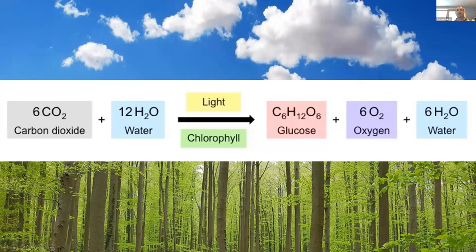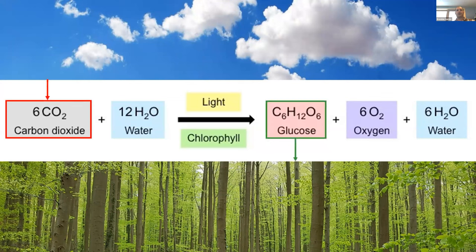Carbon sequestration starts with photosynthesis, where large amounts of CO₂ are removed from the atmosphere by plants and sequestered in plant materials. Trees are particularly important because that sequestered carbon is stored in large quantities in wood — trunks, branches, and roots — and that wood persists on the landscape for long periods of time. For this reason, forests have been identified as one of our primary allies for mitigating climate change long term.